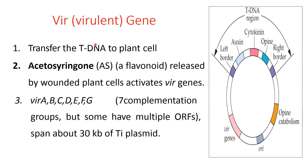The vir gene, or virulence gene, helps in transferring the T-DNA into the plant cell. The acetosyringone, a flavonoid released by wounded plant cells, activates the vir gene. There are seven types of vir genes: vir A, vir B, vir C, vir D, vir E, vir F, and vir G. These seven vir genes are complementation groups, but some have multiple open reading frames spanning about 30 kb in Ti plasmids.